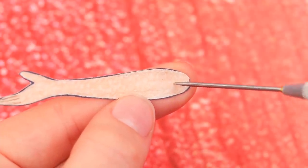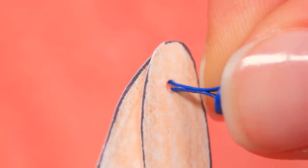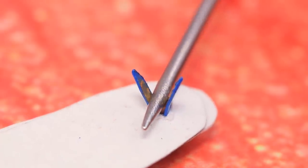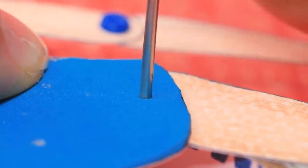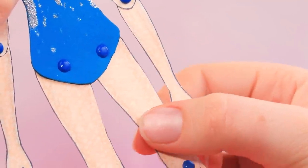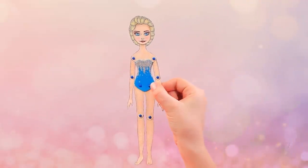Poke holes at the elbows with an awl. Press on a brass fastener and attach it. Now fasten the arms to the shoulders. Connect the legs to the body and add on the rest. Now our doll is almost alive!